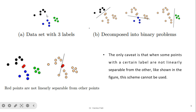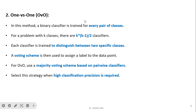In the visual representation, each class is shown in a different color. One class forms one category, and the rest form another. The key limitation of this method is that the data should be properly linearly separable; otherwise, this method cannot be used.